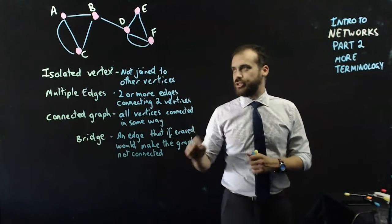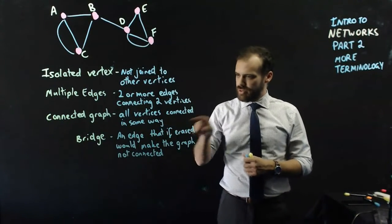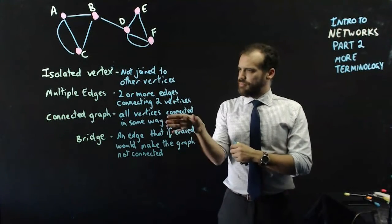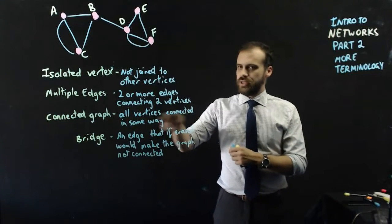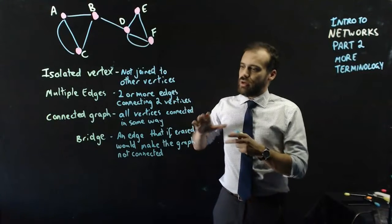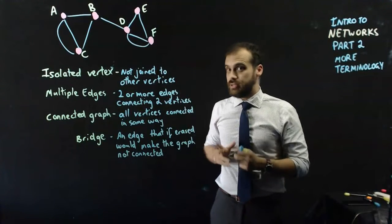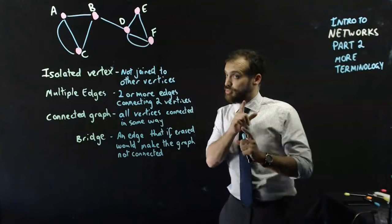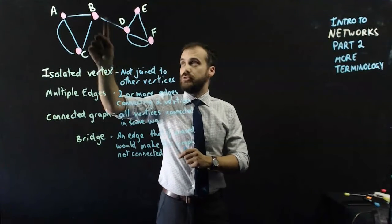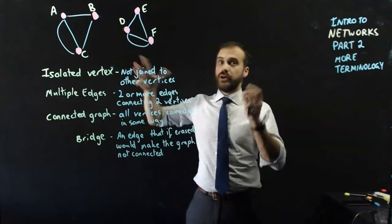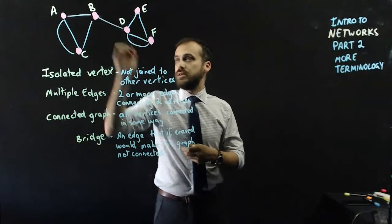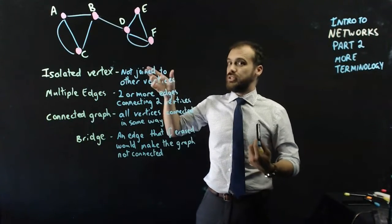Connected graph. And that brings us to bridge. An edge that, if erased, would make the graph not connected. Can you see a bridge, a road, that if I would have erased the road, this graph would not be all connected anymore? Yes, I hope you can. If we got rid of this road between B and D, my graph is no longer connected. I've got a group of three towns over here, a group of three towns over there. So this is what's called a bridge. It's the only bridge in this graph.